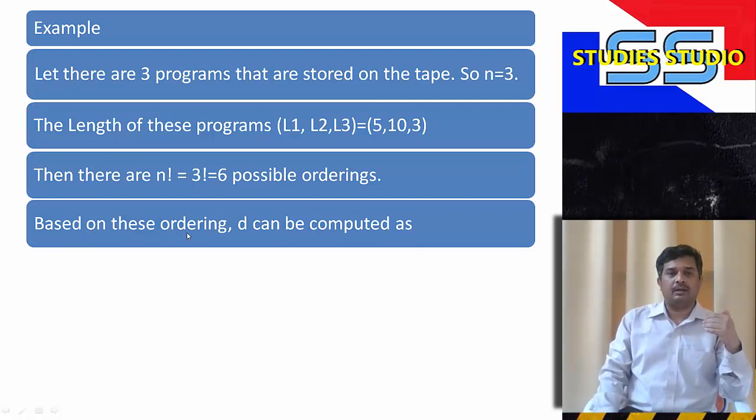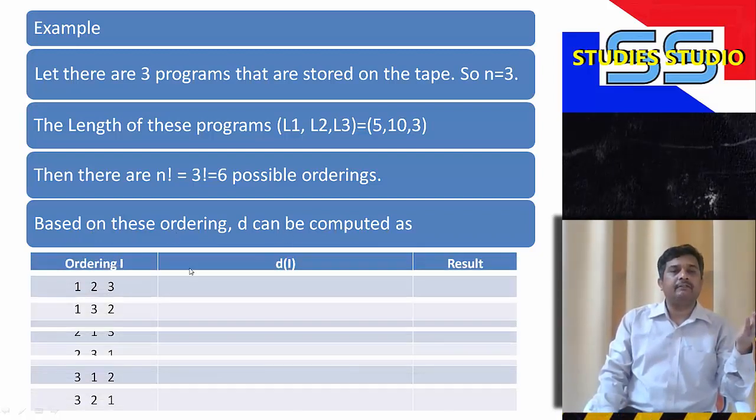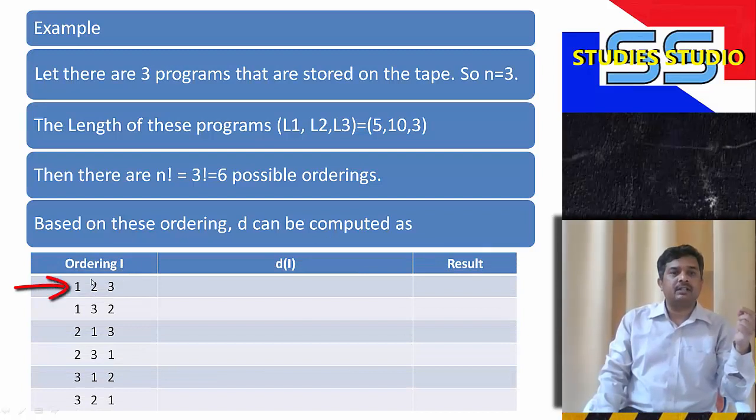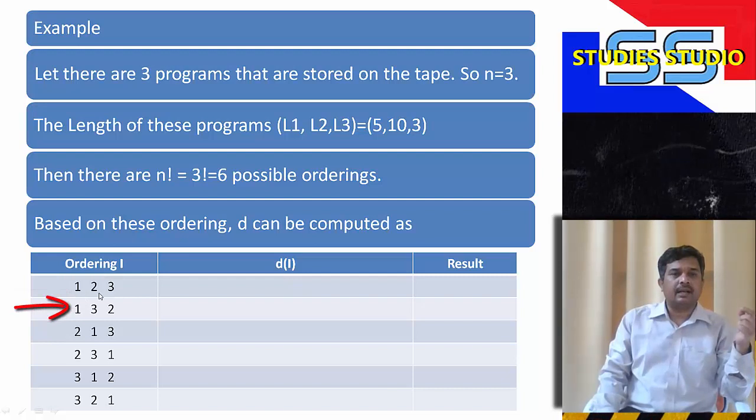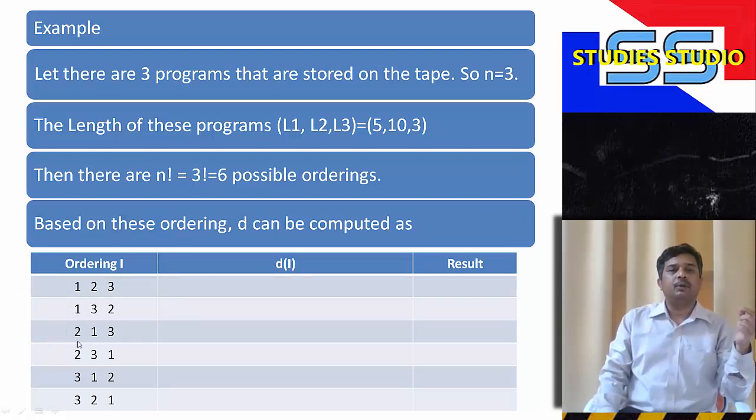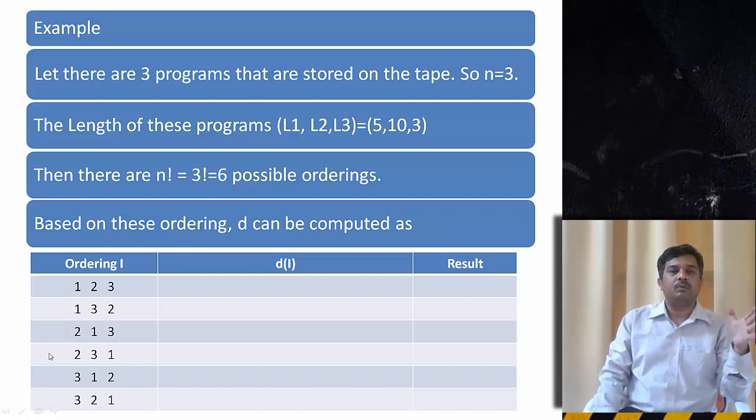Let us see how we are trying to find it. So initially the orderings will be: I can have the first program first then second program then third program, first third second, second first third. In this way I can order the programs in six different ways. Let us see their calculations.